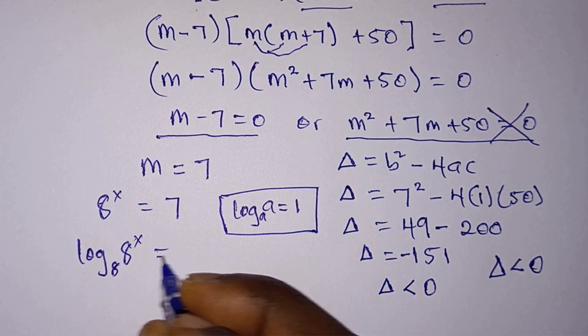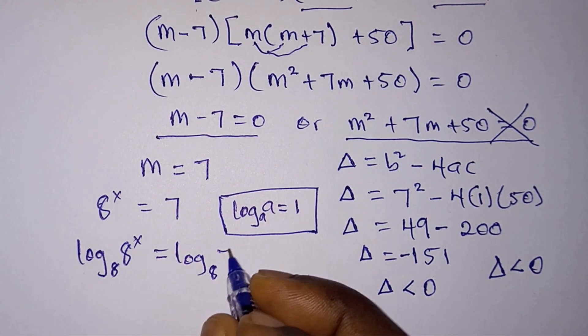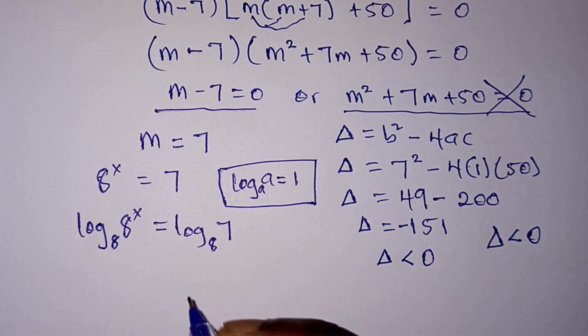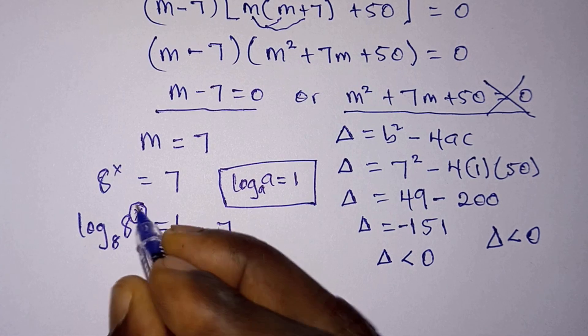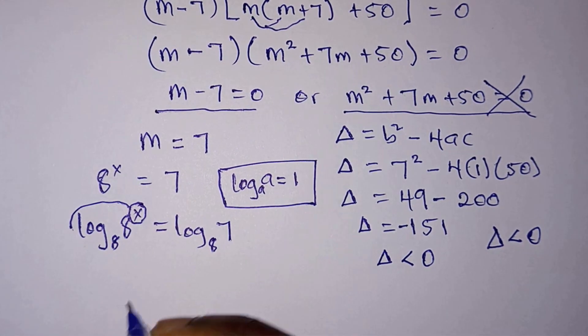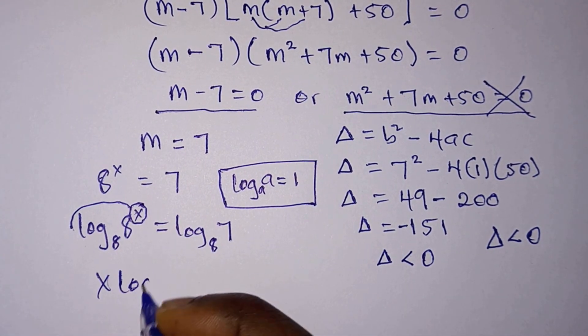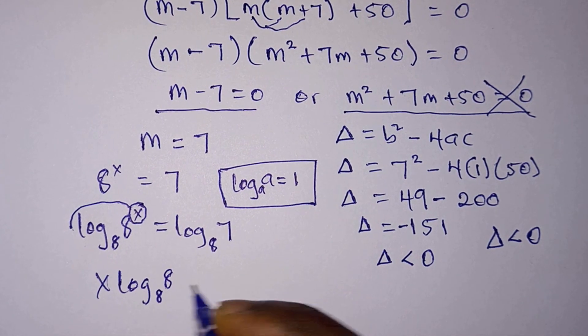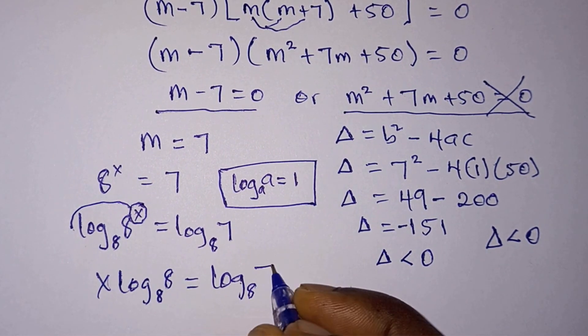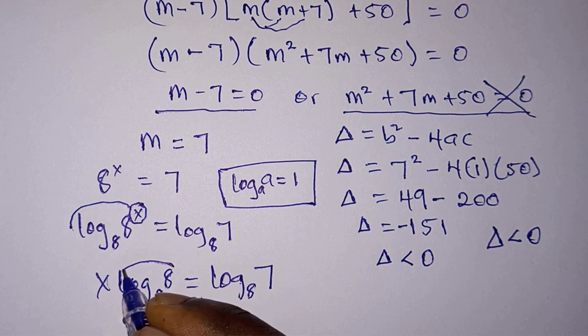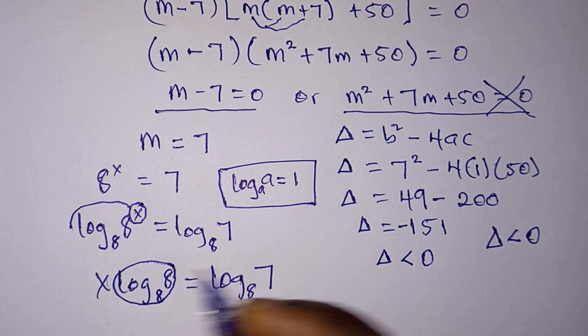So we have log in base 8 of 8 to the power x is equal to log in base 8 of 7. From the properties of log, the power now becomes the leading number, so we will have x log in base 8 of 8 is equal to log in base 8 of 7.